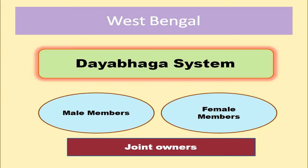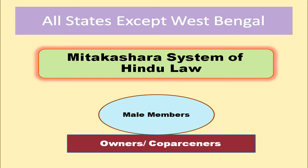There are mainly two systems of Joint Hindu Family business. The Dayabhaga system of Hindu law is applicable in West Bengal, where both male and female members have joint ownership in the business. All other states follow the Mitakshara system of Hindu law, where only male members can become owners, known as co-parceners, of the Hindu family business.